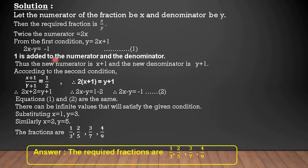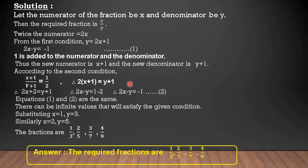Now, 1 is added to the numerator and the denominator. The new numerator is X plus 1 and the new denominator is Y plus 1. According to the second condition, we get (X plus 1) divided by (Y plus 1) is equal to 1 by 2. By cross multiplying, we get 2 into (X plus 1) is equal to 1 into (Y plus 1). Therefore, 2X plus 2 is equal to Y plus 1, so 2X minus Y is equal to minus 1. Number this equation as 2.